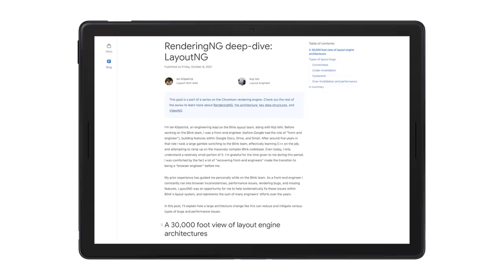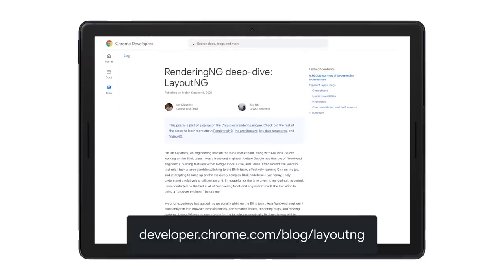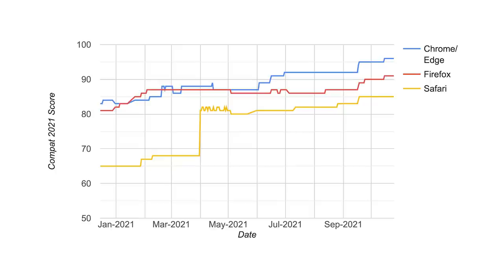For example, we fixed an enormous number of subtle bugs in the layout subsystem alone. As we described in the LayoutNG deep dive blog post, there were a few root causes of these bugs that had to do with the pre-RenderingNG architecture not being up to the task. And we set up mechanisms to continuously monitor and improve quality over time, including bug and regression SLAs and benchmarks such as Compat 2021.